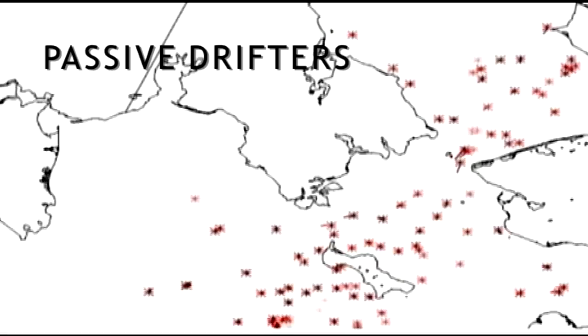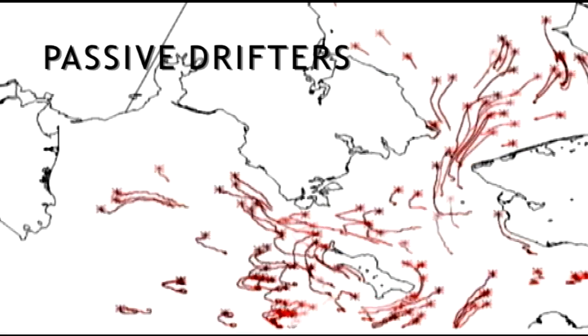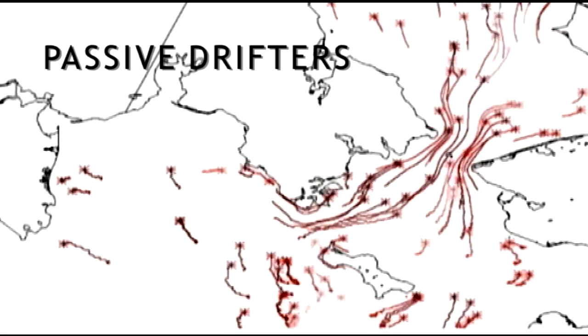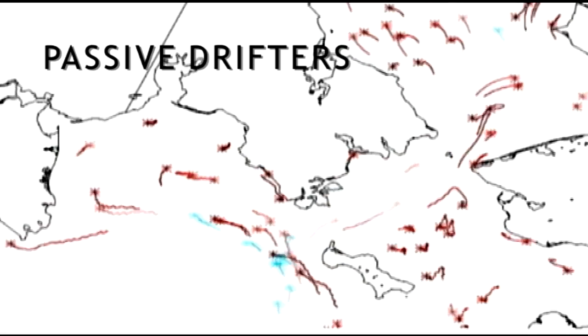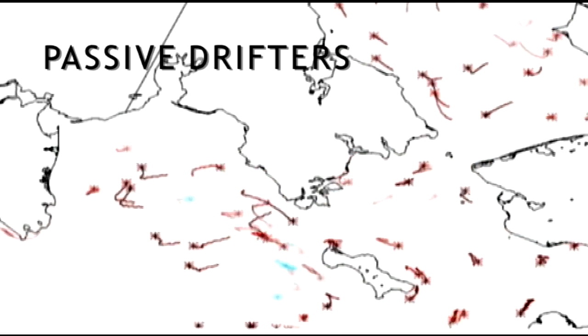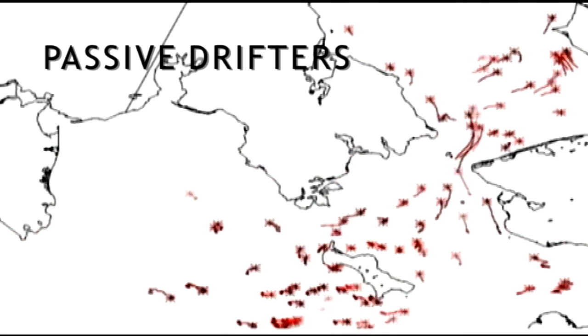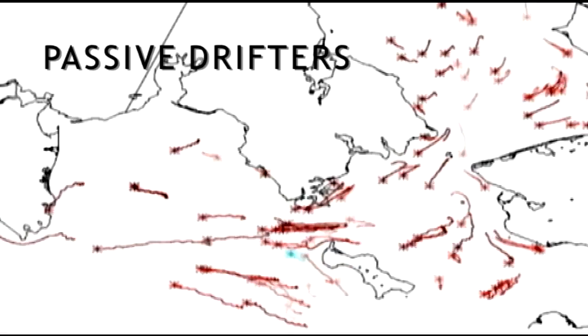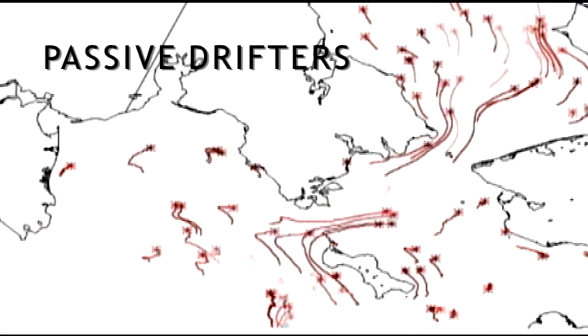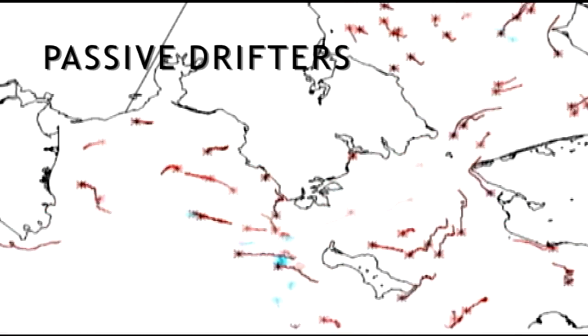I'm not a modeler. I'm an observationalist who likes to use model output. Kate is the modeler, and she generates numerical simulations that I combine with my observational data, and I compare against my observational data to make an assessment of how well the model is working.